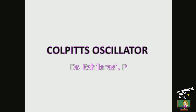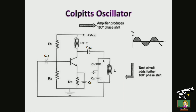Hello students. In this video we will discuss the working principle of Colpitts oscillator, and also we will derive the frequency of oscillation and condition for oscillation. Colpitts oscillator is a type of LC oscillator which produces sine wave in the range of radio frequencies. Hence it is coming under high frequency oscillator or radio frequency oscillator.